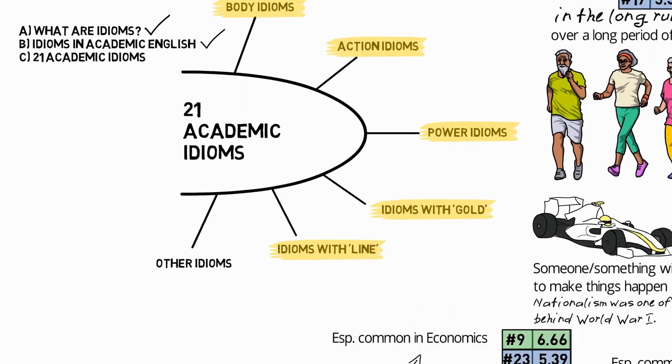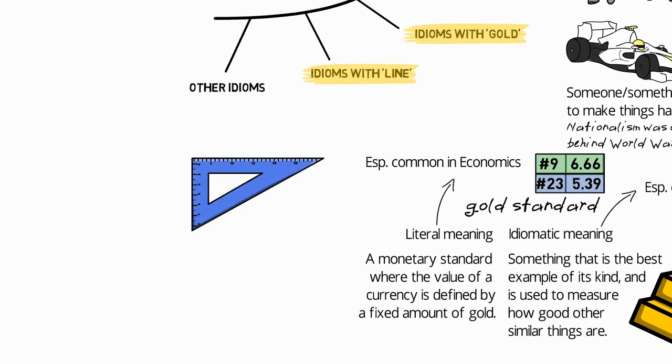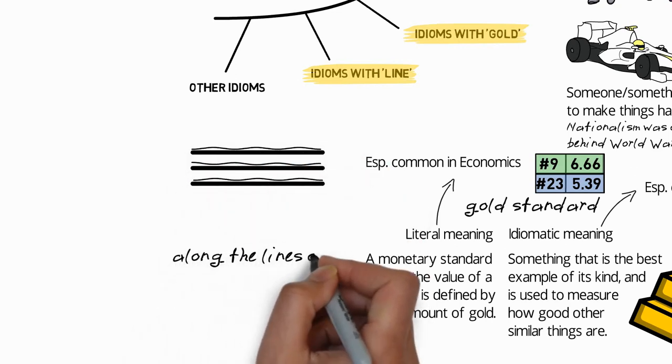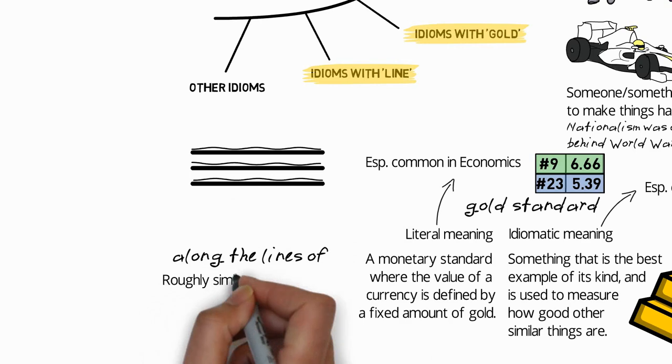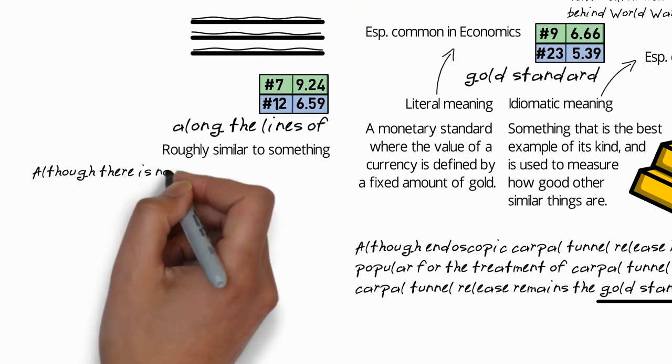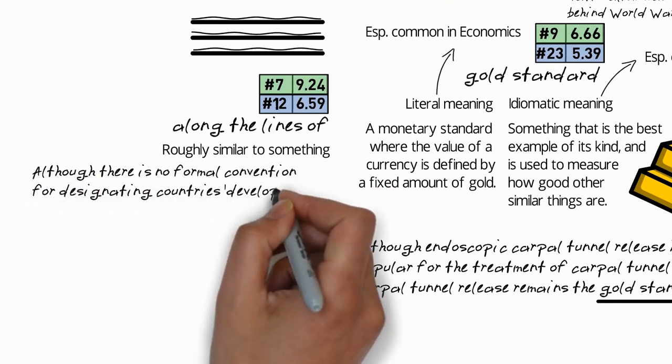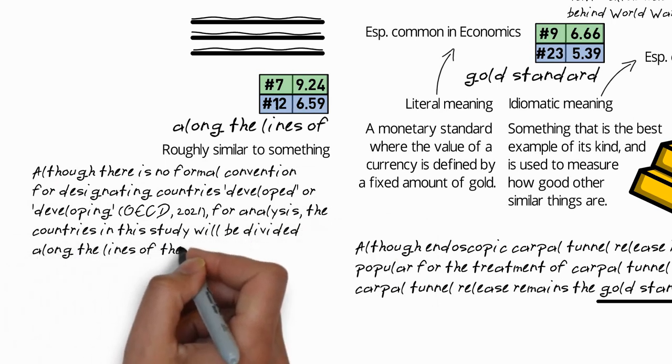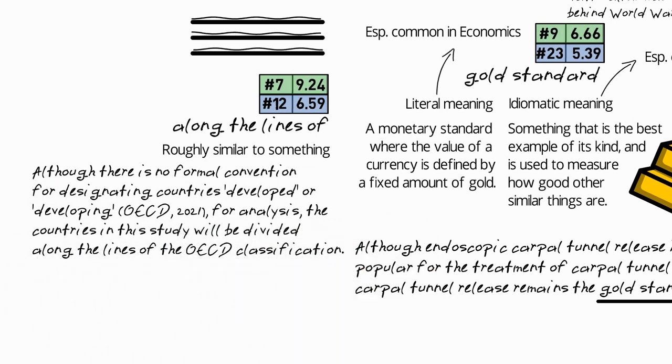Next, let's consider idioms with the word line, and there are two of these. The first is along the lines of, which means roughly similar to something, and this is quite common in both writing and speaking. In fact, it ranks seventh for writing. For example, although there is no formal convention for designating countries developed or developing, OECD 2021, for analysis, the countries in this study will be divided along the lines of the OECD classification.